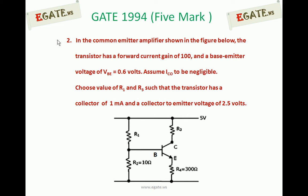To get IC of 1 mA and VCE of 2.5 volts, what must be the values of R1 and R3? For the given beta, forward current gain of 100 and VBE of 0.6 volts, where IC0 can be neglected.